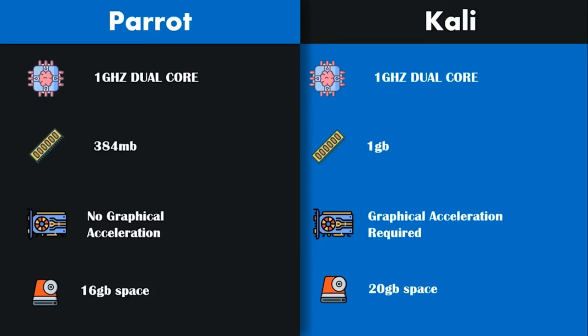Basically, Parrot OS is a much more lightweight version. We see that Parrot OS definitely wins against Kali Linux when it comes to hardware requirements due to its lightweight nature. Not only does it require lesser RAM to function properly, but the full installation is also pretty lightweight, thanks to the use of the Mate desktop environment by the developers. If you're having an older hardware configuration on your computer, Parrot OS should definitely be your choice.